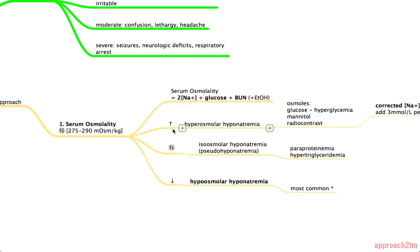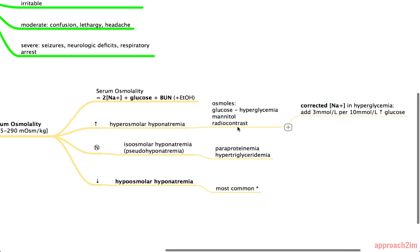So if it for some reason comes back high, so you have hyperosmolar hyponatremia, the possibilities are you'll have hyperglycemia or mannitol or radiocontrast. So for hyperglycemia, you can correct for that by adding 3 to the sodium concentration per increase in glucose by 10.